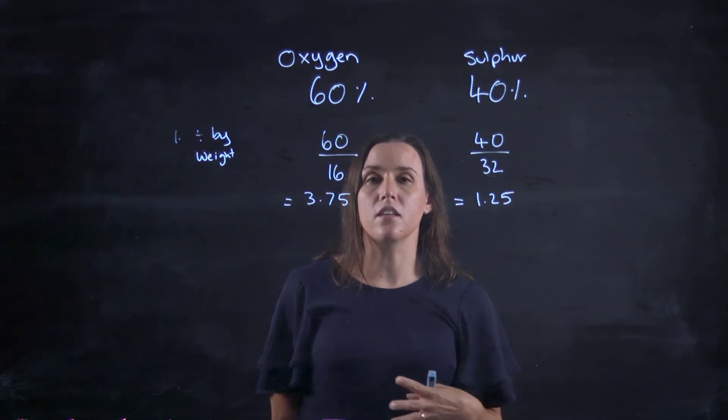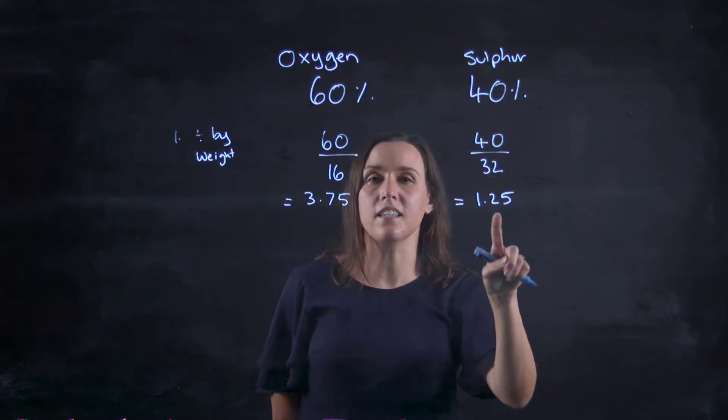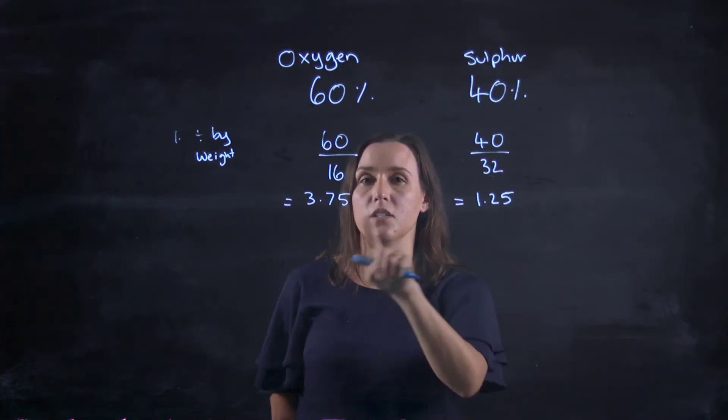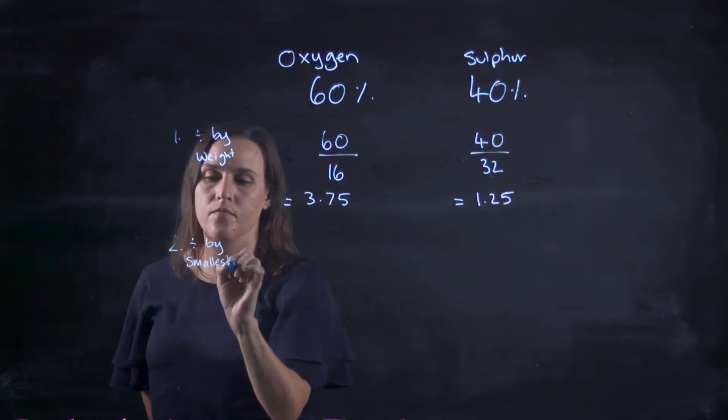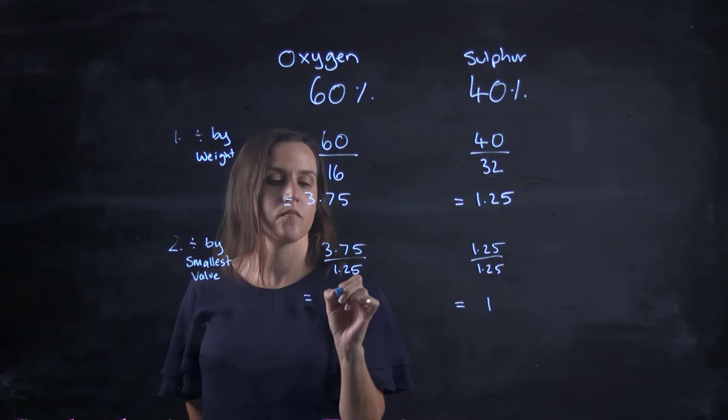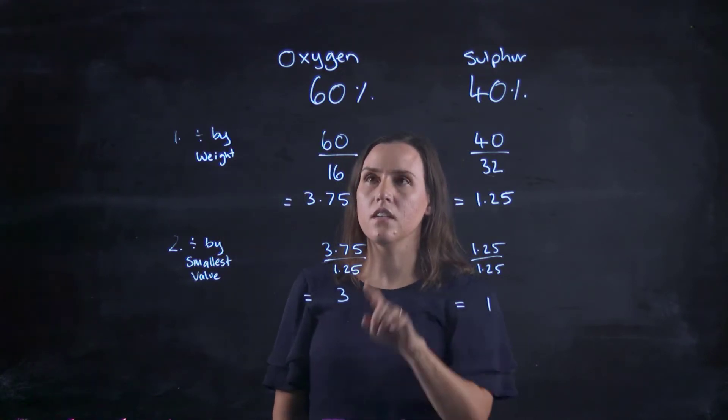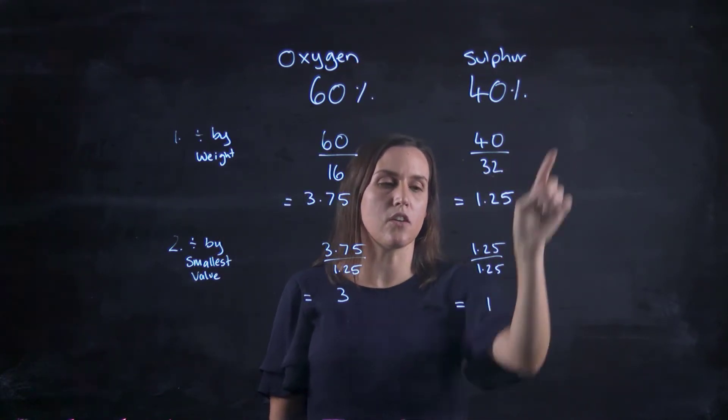Now, because I want to get the ratio between them, the second step is to divide by the smallest one out of these two numbers. So it would be the sulfur at 1.25. So then this gives me oxygen 3, sulfur 1.